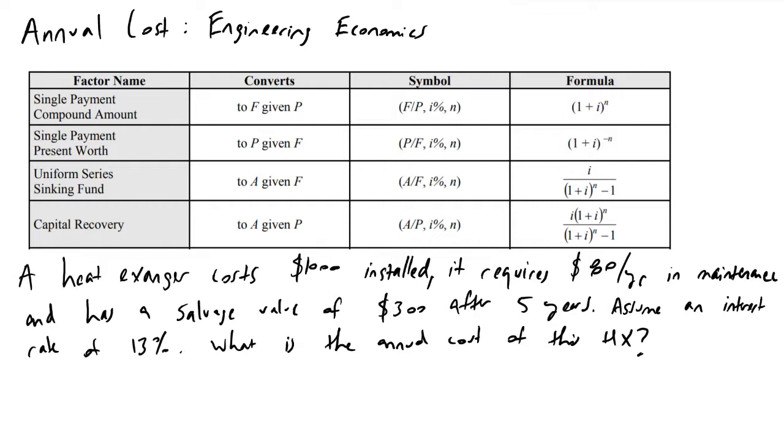And so we're gonna look first through this problem statement. We're told that a heat exchanger costs $1,000 installed so we can buy the heat exchanger and have it fully installed into our plant for $1,000 and it's gonna require $80 per year to maintain.